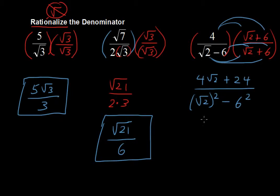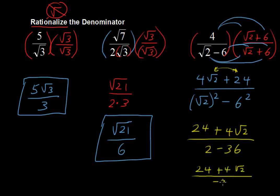So I'll rewrite that in the next step. Typically we write the rational number first. So 24 plus 4 square roots of 2 over 2, square root of 2 times the square root of 2 is just 2, 2 minus 36. So in the denominator, we're going to have something negative. And so we have 24 plus 4 square roots of 2 over negative 34.